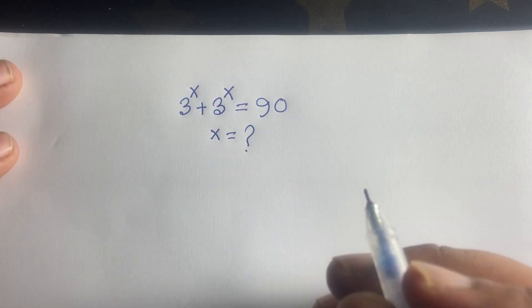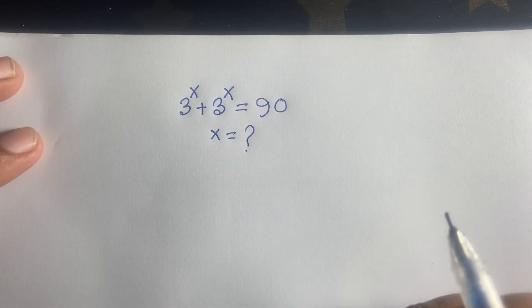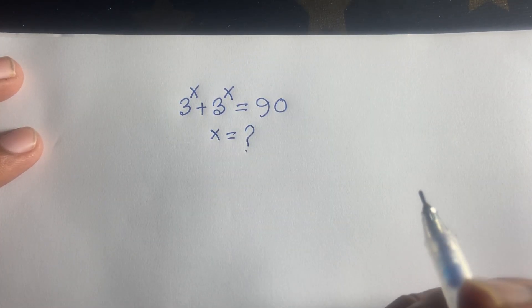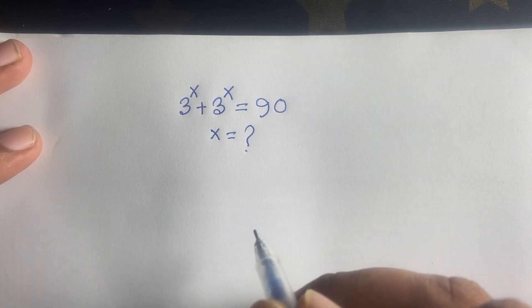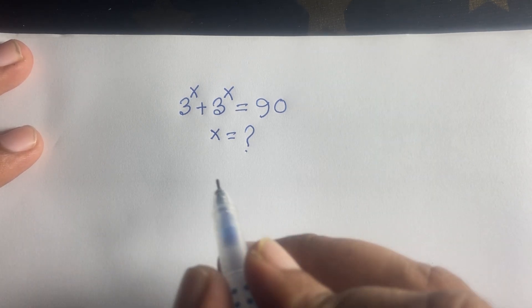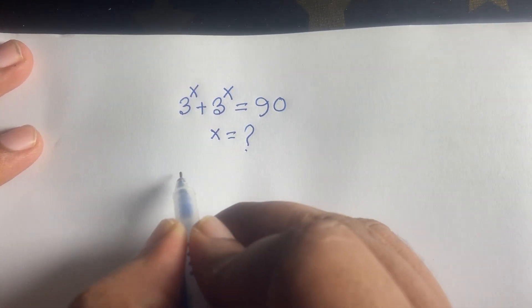3 to the power x plus 3 to the power x is equal to 90. x is equal to what? How to solve this question. In this case, I can see easily here is 3 to the power x is common.